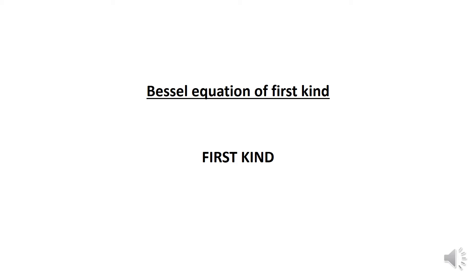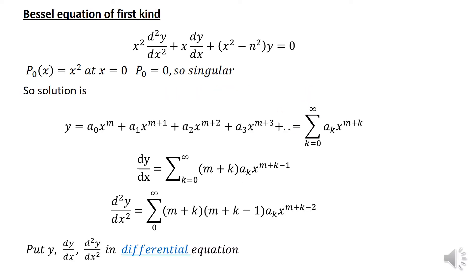This is a Bessel function of first kind. There are two kinds of solutions: first kind and second kind. We are discussing the first kind here. Suppose the Bessel equation is x² d²y/dx² + x dy/dx + (x² - n²)y = 0. Here x equals p₀x, and if we put x equal to zero, p₀ equals zero.